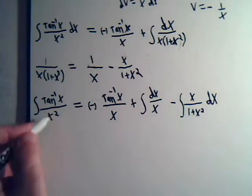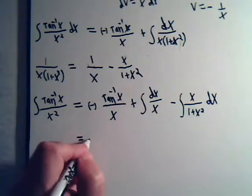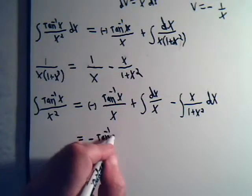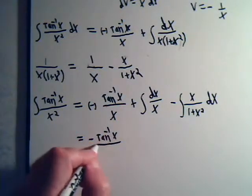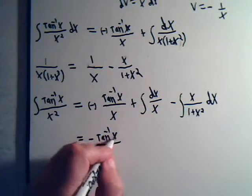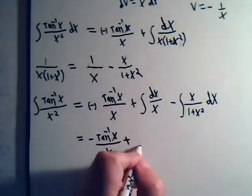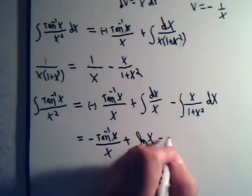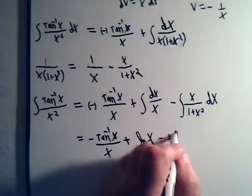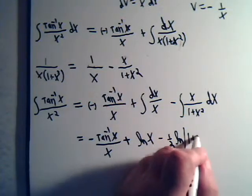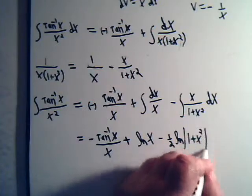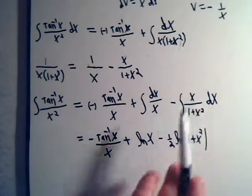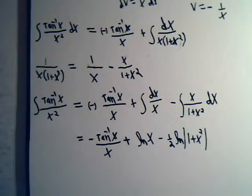So it looks like we're going to get the solution to this is minus inverse tangent of x divided by x plus the natural log of x. And then this would be minus 1 half the natural log of 1 plus x squared. If we call this u, du will be 2x dx. So we have a 1 half factor in there. And that's it.